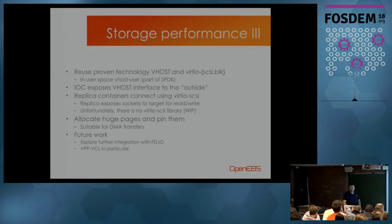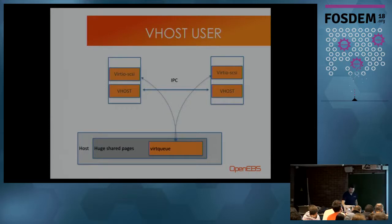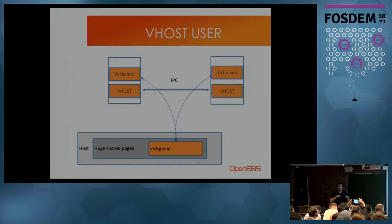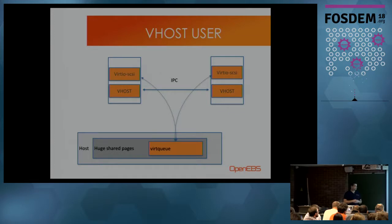To make the vhost-user mechanism clearer: we have huge shared pages which are containerized. We build a virtual queue and expose that virtual queue through an IPC mechanism — just simple shared memory based on regular vhost specifications. Nothing magical, but it allows us to communicate as fast as if it were native.